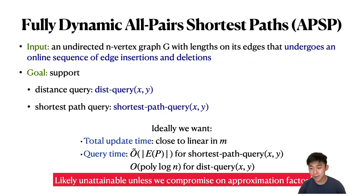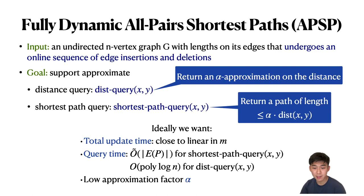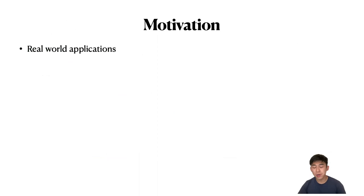Given this strong lower bound, our ideal algorithm is likely unattainable unless we compromise on approximation factors. So we adjust our goal: now we only require our algorithm to support approximate distance queries, where we return a path of length at most alpha times the distance between x and y, where alpha is the approximation factor. Ideally, we would like to achieve as low an approximation factor alpha as possible.